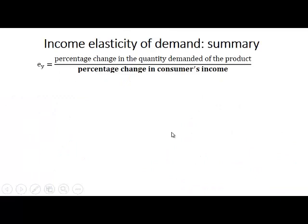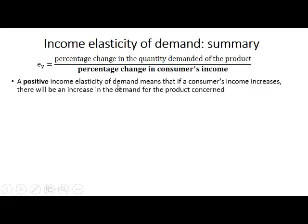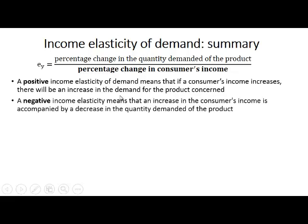To summarize income elasticity of demand: the formula is percentage change in the quantity demanded of a product divided by percentage change in consumers' income. A positive income elasticity of demand means that if a consumer's income increases, there will be an increase in demand for the product concerned. A negative income elasticity of demand means that when there is an increase in consumers' income, it will be accompanied by a decrease in the quantity demanded of that product — as we saw with maize meal.